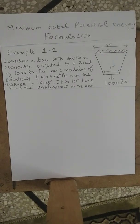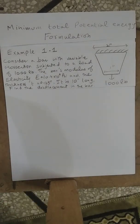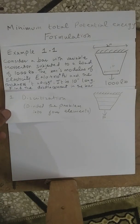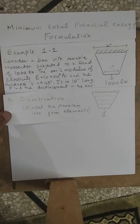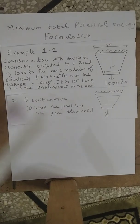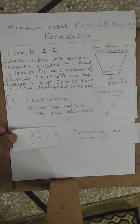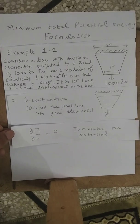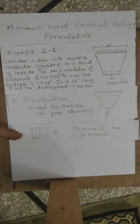The first step is the same as the previous methods: we will discretize this problem into a finite number of elements. We have divided the problem into four elements and five nodes. Here we have the equation for the minimum total potential energy formulation, so we have minimized the potential energy.